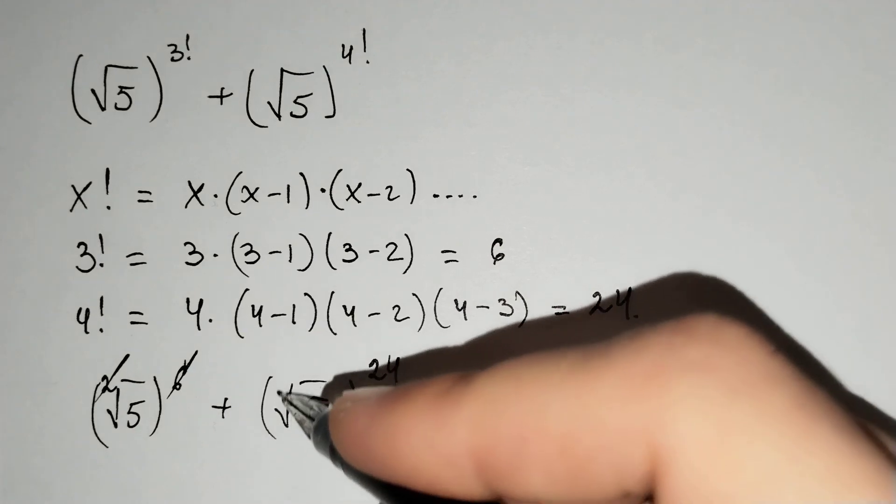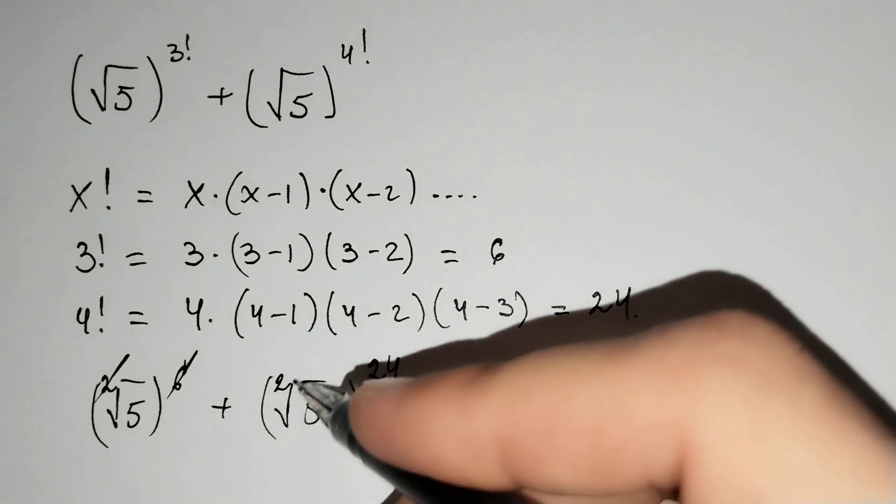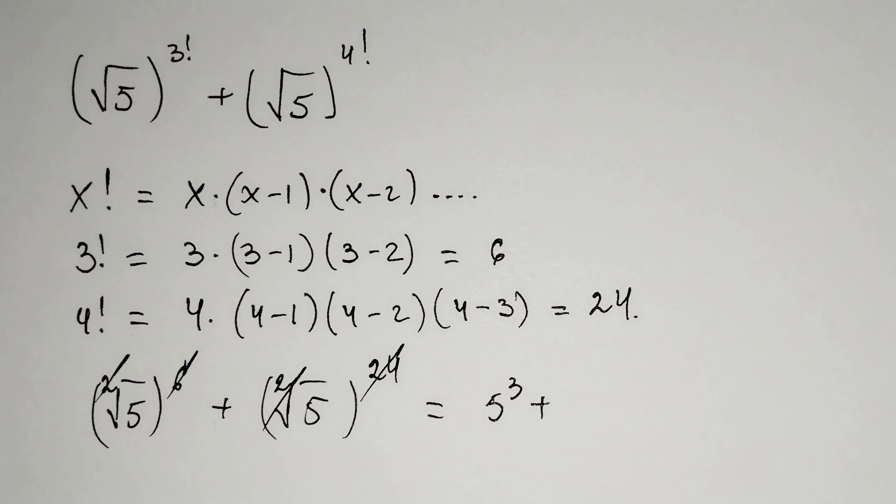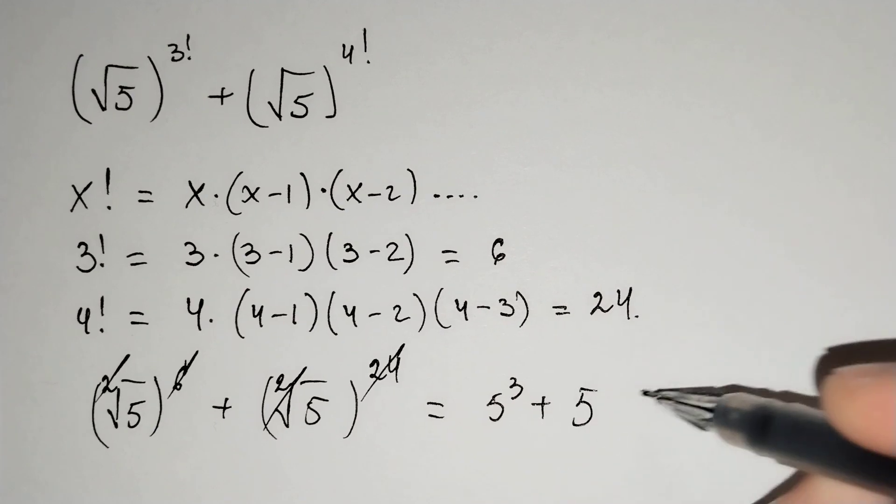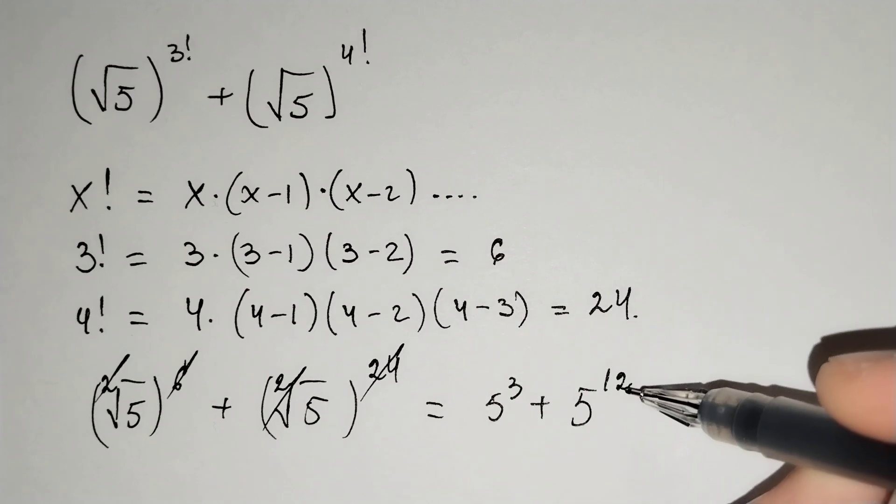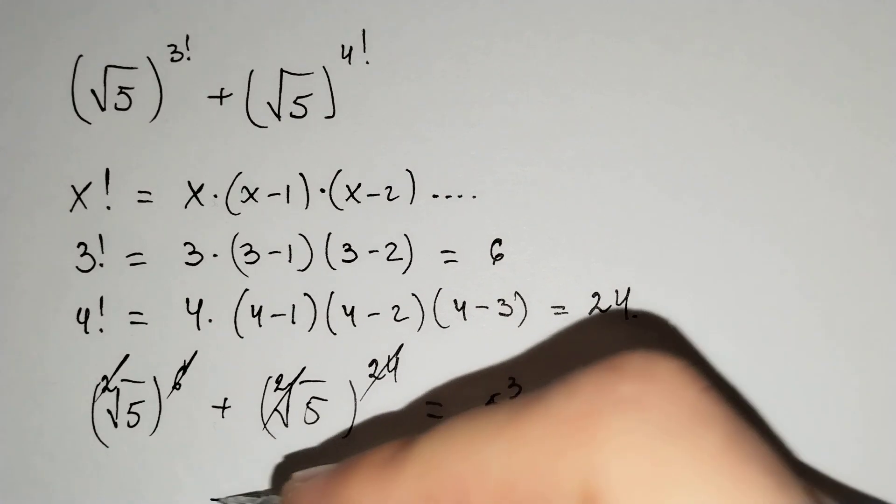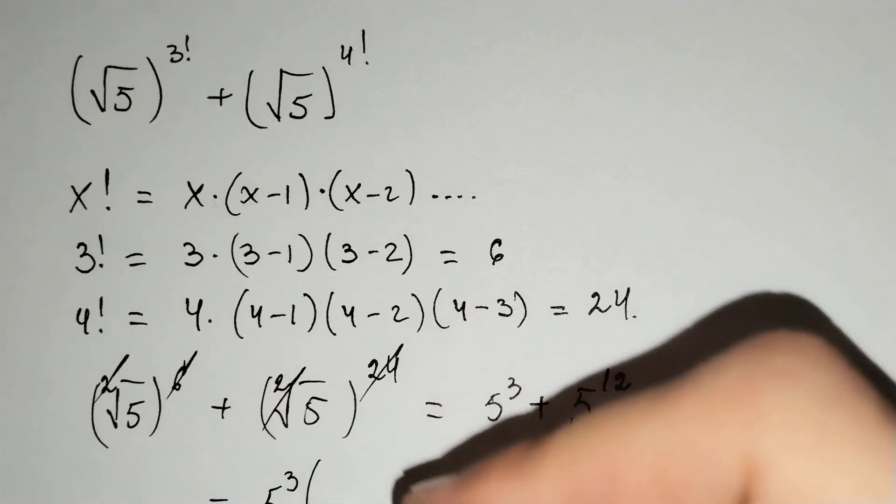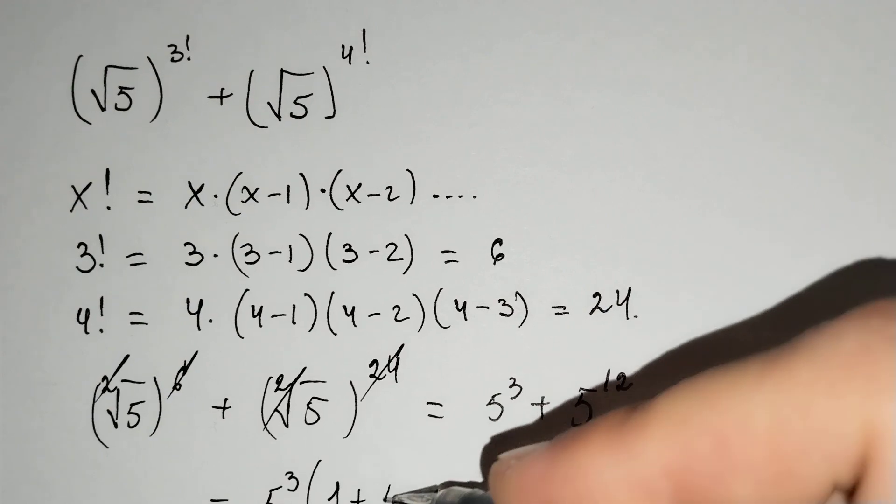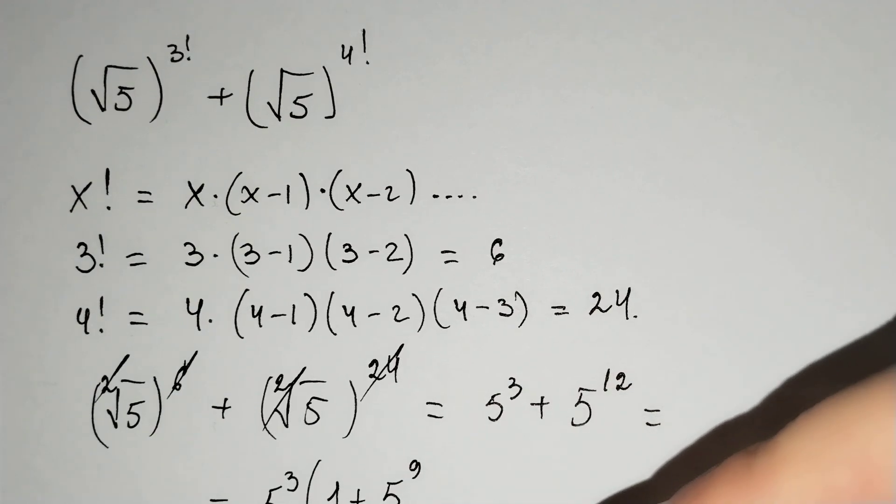Plus, this is the second degree and we may cancel this. And 5 power 12 remain here. And it equals 5 power 3 times 1 plus 5 power 9.